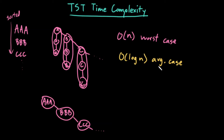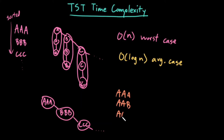One thing to note is that a TST works extremely well if my words have very similar prefixes. So for example, let's imagine I have the words aaa, aab, aac, and aad.